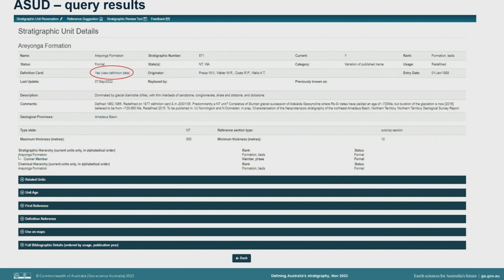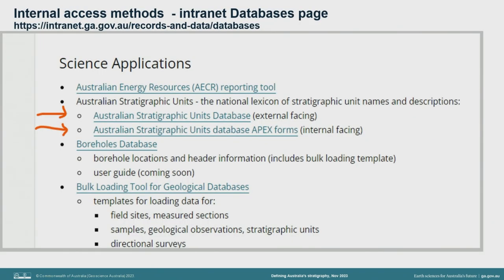Each of the dark blue bars towards the bottom can be opened to provide more information, including details of all of the references used to compile the data for a unit. The state downloads also include all of this information, including any available unit definition data. For those within GA, you can also access the external search tool through the GA intranet, and you have access to view some additional data through the internal APEX forms.